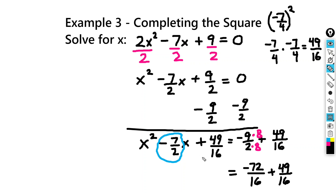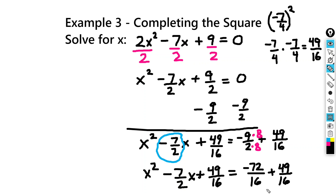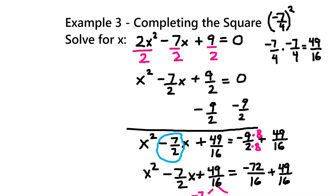And if I just neaten this up, I'll write it out first. So we have x squared minus 7 halves x plus 49 sixteenths. Now if I want to factor, you may notice the pattern here — the two numbers I'm going to use are negative 7 fourths times negative 7 fourths. That gives me positive 49 sixteenths, and it adds to negative 7 halves.